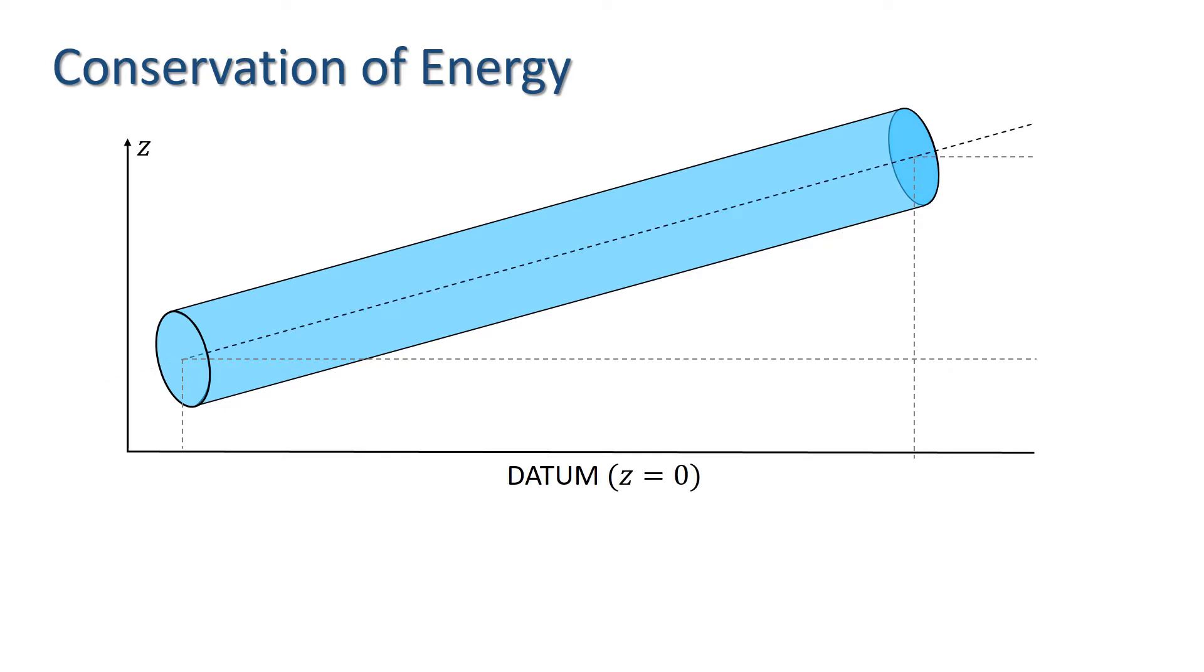Let the direction of flow be denoted S. Let the cross-sectional area of the stream tube be dA, its length dS, and the difference in elevation between its ends be dz.